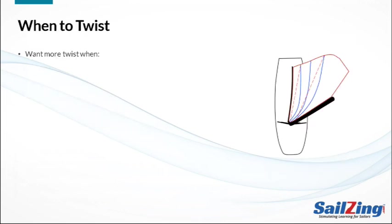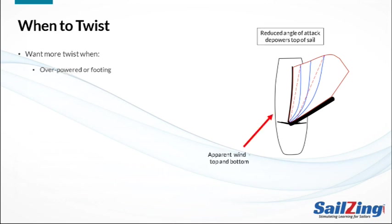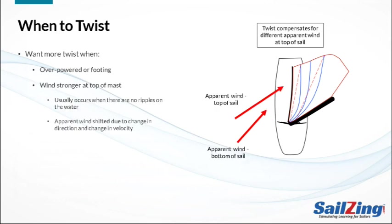You want more twist when you're overpowered or footing off to go fast. In both cases, you may need to twist off the sail to depower it and reduce the heeling force. You also want more twist if the wind is stronger above the surface at the top of the mast than at the surface. This usually only happens in very light air when there is very little turbulence, as evidenced by a lack of ripples on the water. For more on why this occurs, see our post on wind shear and gradient.